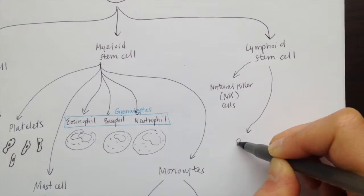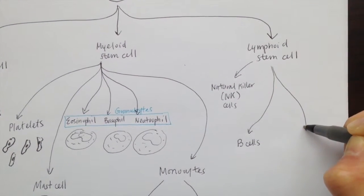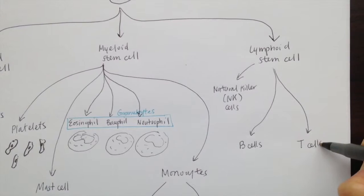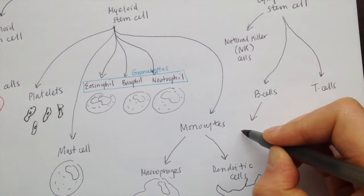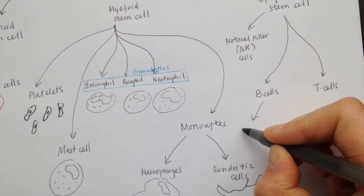From the lymphoid stem cells arise B cells and T cells. B cells can further differentiate into memory cells and plasma cells. Plasma cells will act as antibody factories.